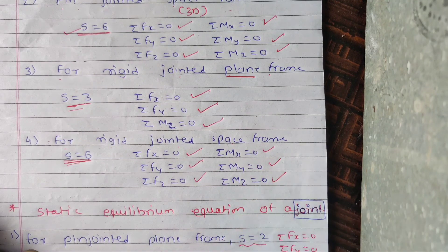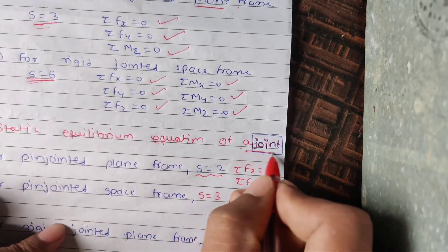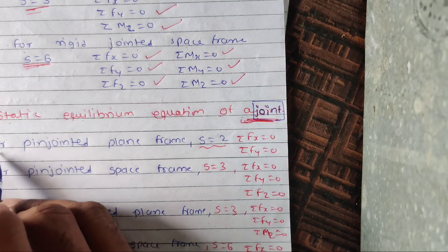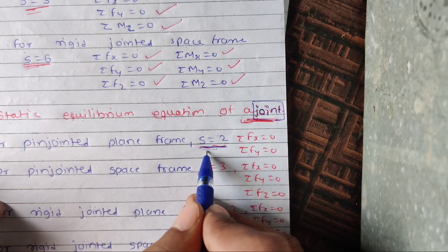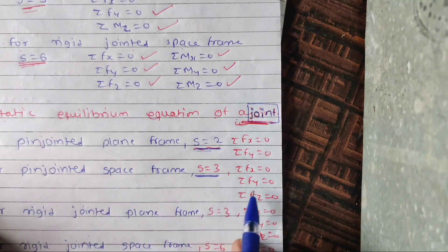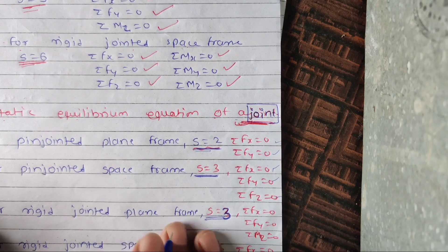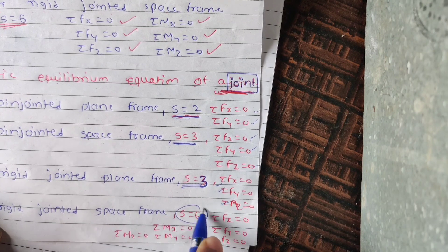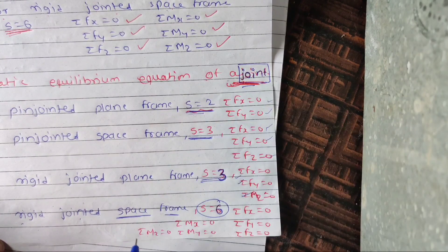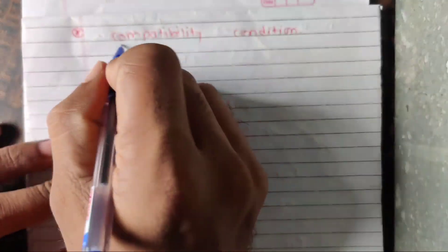For a rigid-jointed space frame, there are 6 equilibrium equations: Fx, Fy, Fz, Mx, My, and Mz. For equilibrium equations at a joint: pin-jointed plane frame S = 2; pin-jointed space frame S = 3 (Fx, Fy, Fz); rigid-jointed plane frame S = 3 (Fx, Fy, Mz); and for rigid-jointed space frame at joint, it is similar to the structure-level equations.